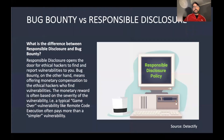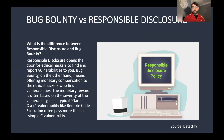What is the main difference between Bug Bounty and Responsible Disclosure? It's easy. Bug Bounty is a program where you pay for each valid vulnerability found by researchers. Responsible Disclosure is a program where you agree with the researcher that they can submit vulnerabilities in a secure way, but there is usually no compensation. However, some companies do offer rewards — for example, IKEA.